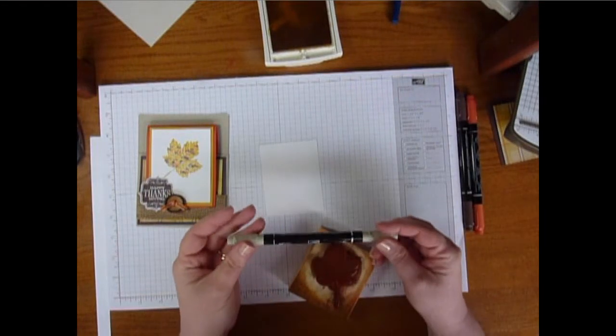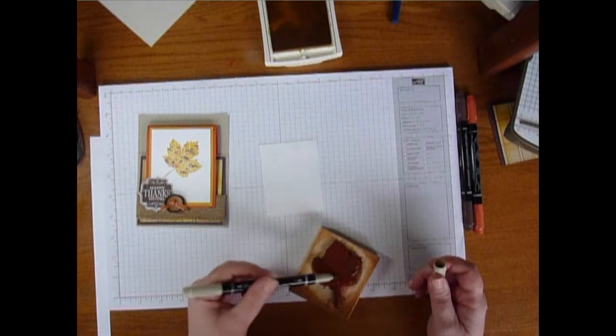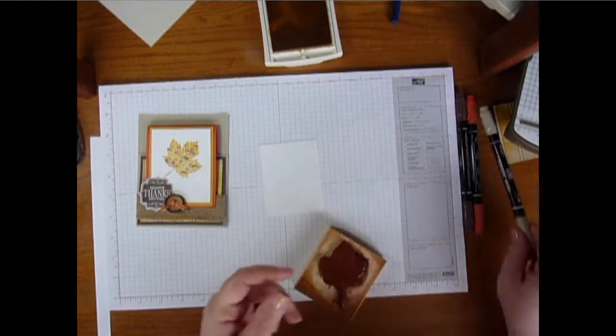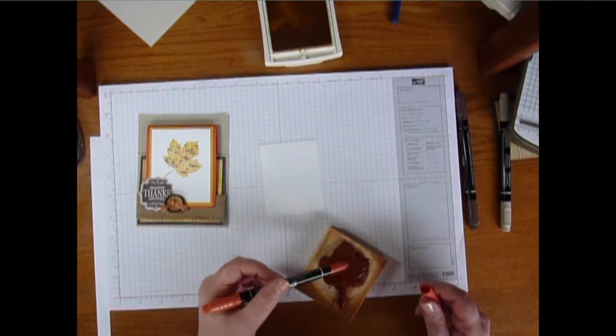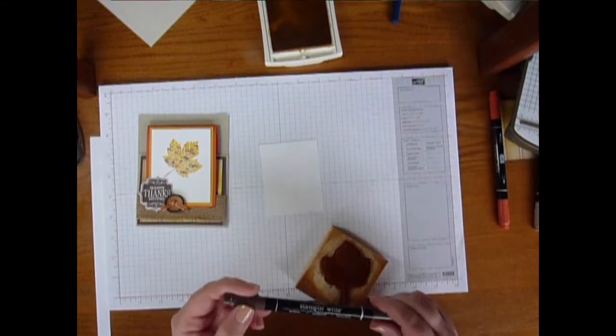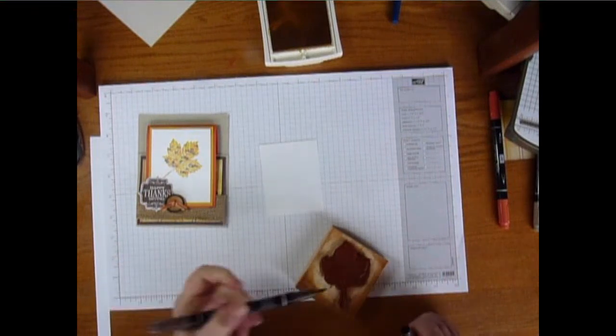And then we're going to thump some markers onto it. You just want to hold your marker really loosely. I'm using Sahara Sand here. Just go ahead and do some thumping. I'm going to move up now to Tangerine Tango, and again holding the marker loosely just thump it on top. And finally finishing with Chocolate Chip. Make sure you've got the thicker tip here.